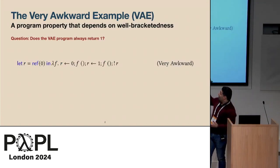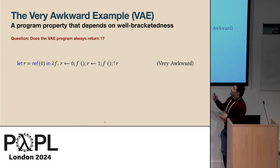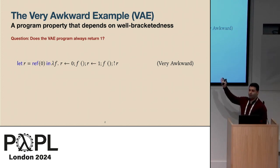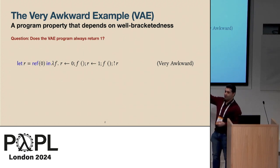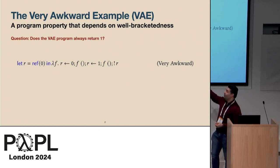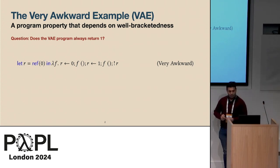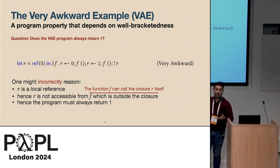This is an interesting property that has been studied in game semantics and has also been used as a criterion for correctness of calling convention. Let's look at this example, which I'm obligated to show when talking about well-bracketed control flow. It's a very simple program. The question is: does this program always return 1? The program first allocates a reference r with value 0, then returns a closure that takes a function f, sets the reference to 0, calls f, sets the reference to 1, calls f again, and then reads the reference.